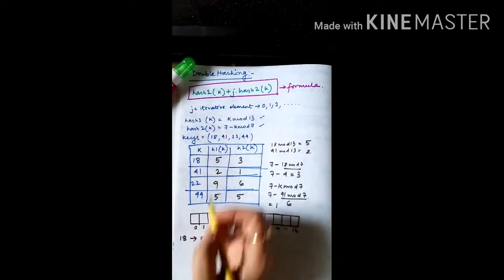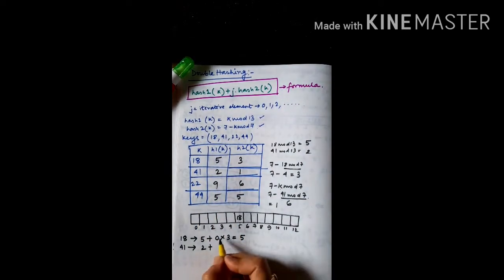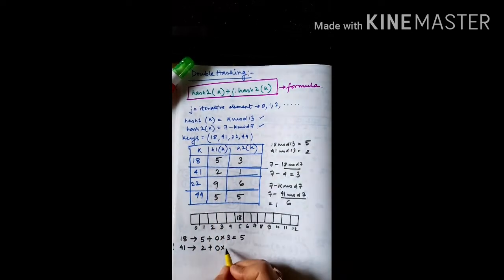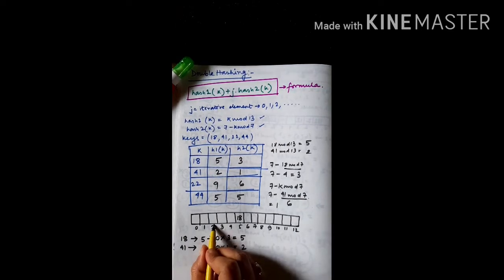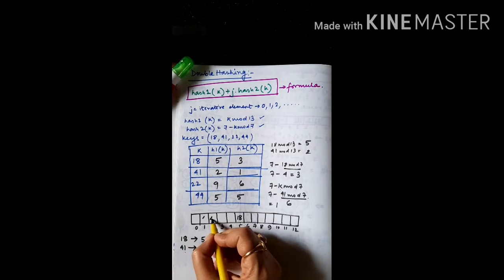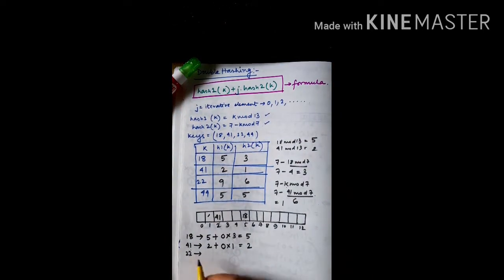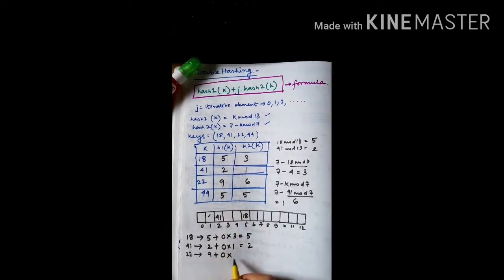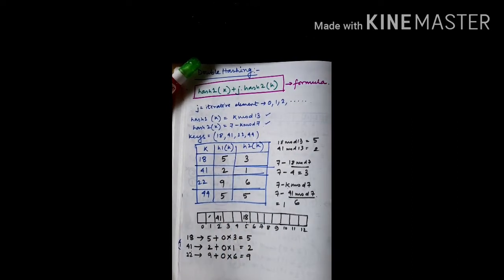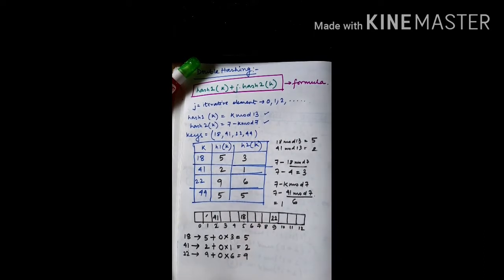For the second key 41: hash function 1 is 2, j is 0, hash function 2 is 1, giving index 2. Index location 2 is empty, so we place 41 at index 2. For key 22: hash function 1 is 9, j is 0, so the result is 9. The 9th location is also empty, so we place 22 at index 9.